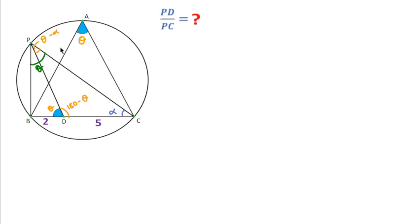Now if this angle is theta, then this angle will be equal to alpha, because this angle is theta minus alpha, then this will be definitely alpha, so that the sum of these two angles will be equal to theta.